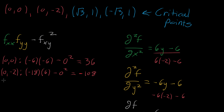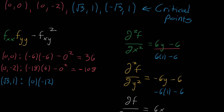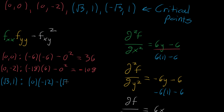If we plug in (√3, 1): for f_xx, plugging in y equals one gives six times one minus six, so the whole thing is just zero. For f_yy, plugging in y equals one gives negative six times one minus six, so the whole thing is negative 12. For the mixed partial derivative, which is six x, x equals √3, so we're subtracting off (√3)² which equals three. This first part is entirely zero, and we're subtracting off three, so the result is negative three.